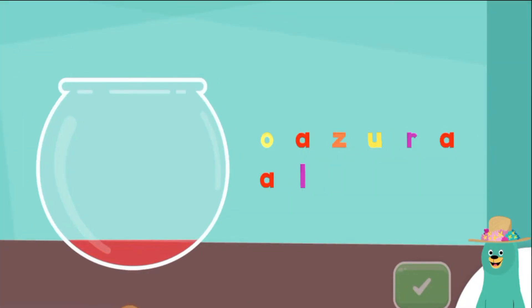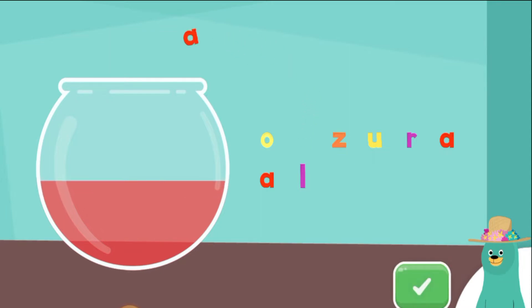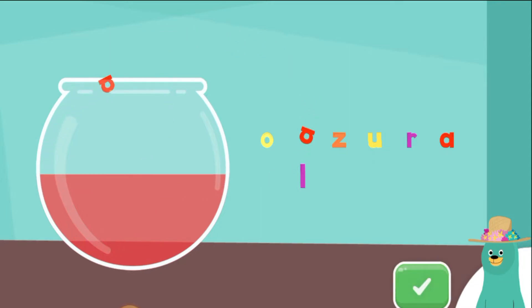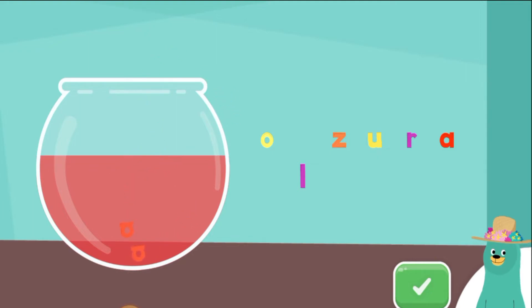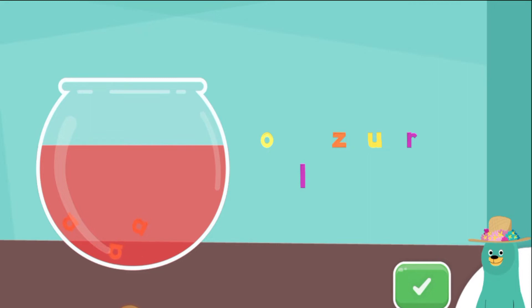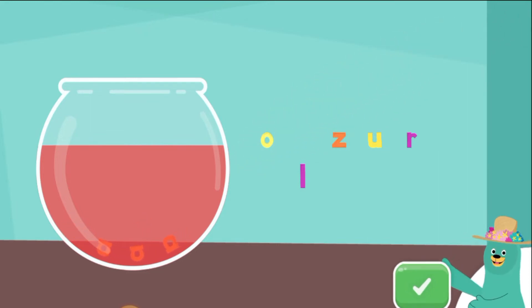Drag the letter A into the bowl. Great! You put the letter A into the bowl.